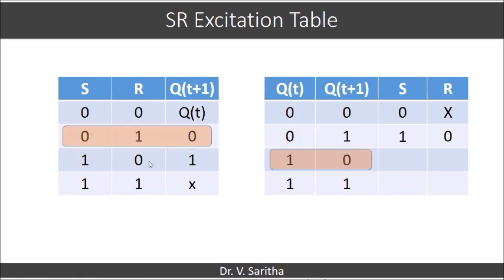Let us go for the next one. Q(t+1) is 0 and Q(t) is 1. So S is 0 and R is 1.